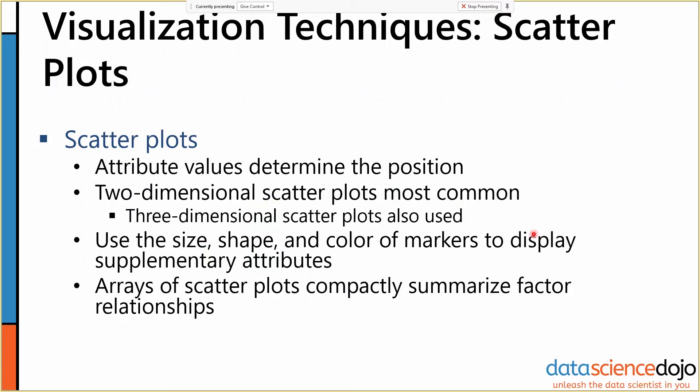Another kind of plot that we use a lot are scatter plots. We allow our attribute values to determine the position — we pick two attribute values and plot them against each other for every data object. We can also use size, shape, and color of our markers to display supplementary attributes. This allows us to construct three or four-dimensional graphs on a two-dimensional plane very easily.